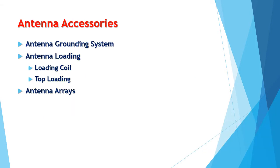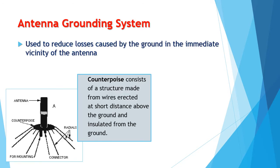Now, we'll be looking at antenna accessories. First, let's take a look at the antenna grounding system. Antenna grounding is used to reduce losses caused by the ground in the immediate vicinity of the antenna. As you can see in the image, there is a counterpoise — a structure made from wires erected at a short distance above the ground and insulated from the ground.